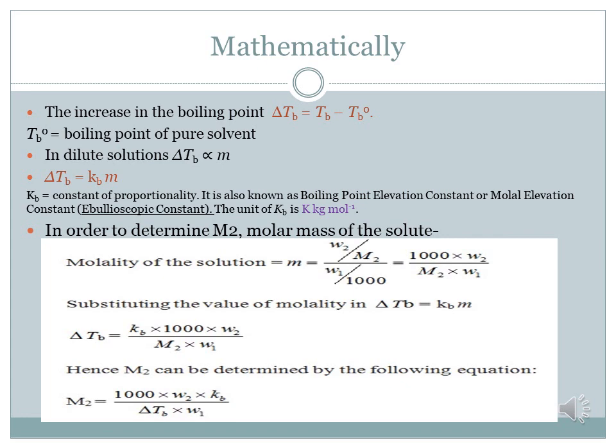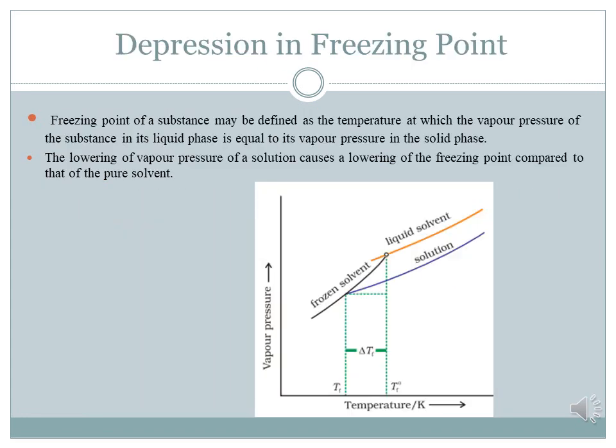We can rearrange this formula to find the molar mass M₂. Since M₂ is in the denominator, cross-multiplying gives: M₂ = (1000 × W₂ × K_B) / (ΔT_B × W₁). We have now come to the third colligative property — depression in freezing point.